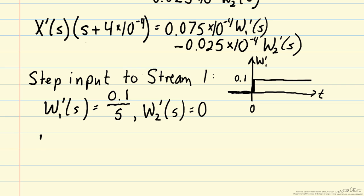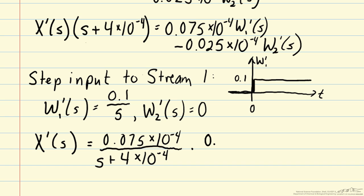So now we can go ahead and plug that in to our x' of s expression. And we'll divide through by s plus 4 times 10 to the minus 4. We'll have in our numerator 0.075 times 10 to the minus 4, and then we'll multiply that by w1' of s, which is 0.1 over s.